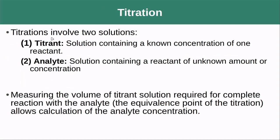Starting off with titrations, this involves two solutions, so we have a little bit of language to understand here. We have the titrant — the solution containing a known concentration of the reactant; this is our known variable. And then we have the analyte — a solution containing a reactant of unknown amount or concentration, so the thing that we don't know the quantitative information about.